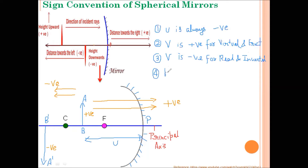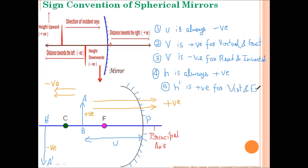Height of object, denoted by H, is always taken as positive because the object is placed perpendicular and above the principal axis, and according to new Cartesian sign convention all distances above the principal axis are positive. H' (height of image) may be positive or negative depending on the nature of the image. H' is taken positive for a virtual and erect image, because an erect image is formed above the principal axis. H' is taken negative for a real and inverted image, because an inverted image is formed below the principal axis.